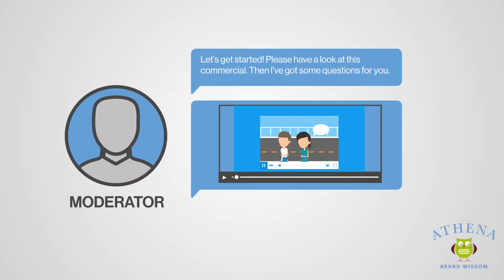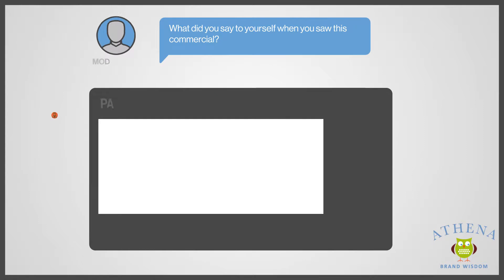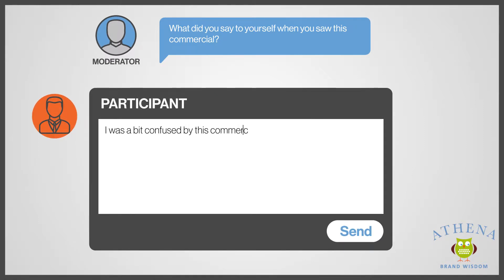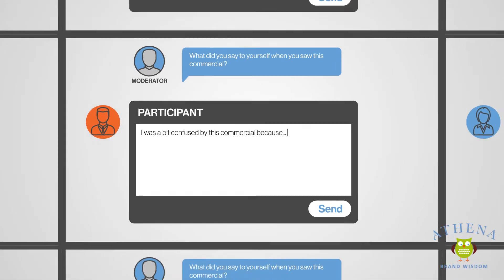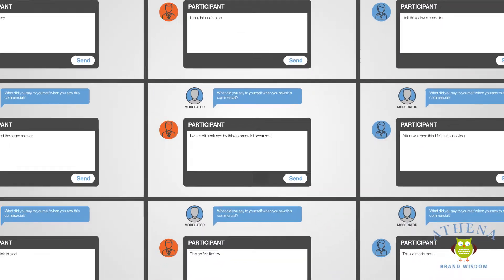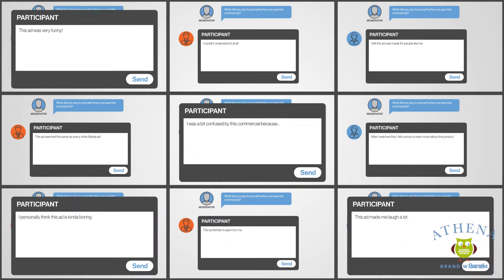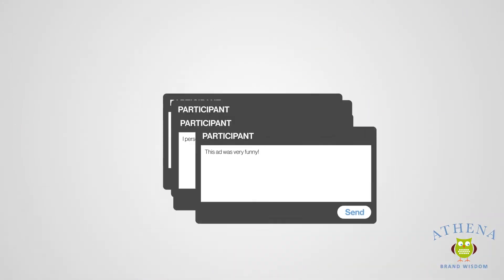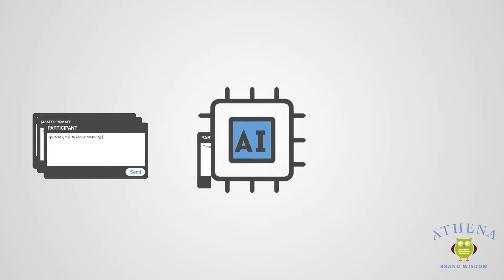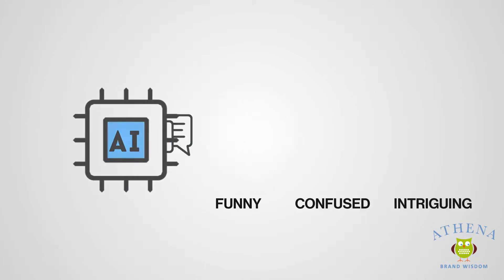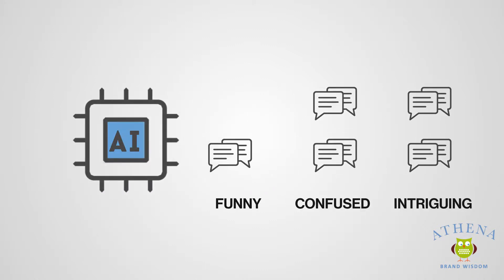Participants respond by typing their answers in their own words into a free-form text box, allowing for nuanced, detailed, personal answers. The AI algorithm parses respondents' answers and identifies how the answers are similar and different.